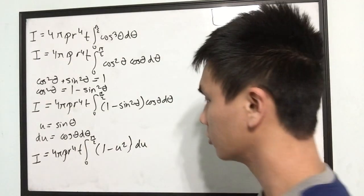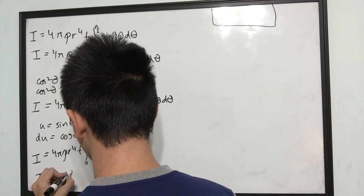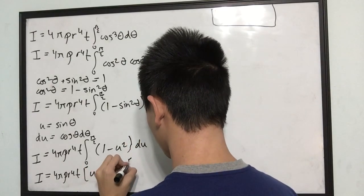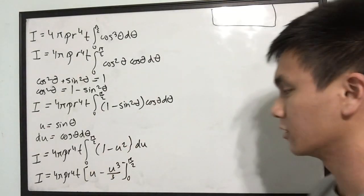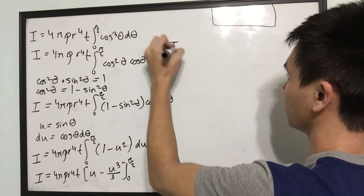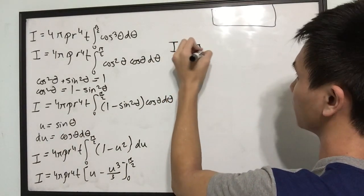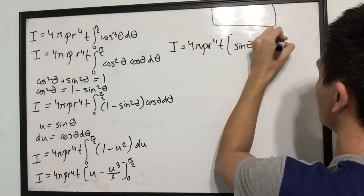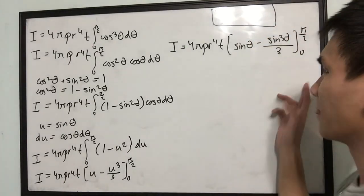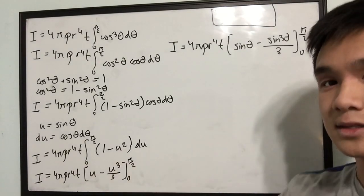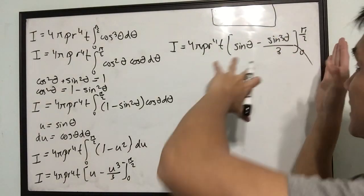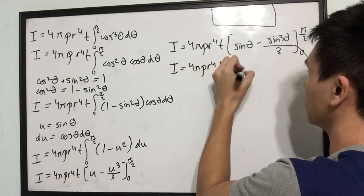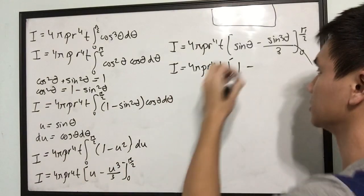By the power rule, this integrates to u − u³/3, evaluated from 0 to π/2. Back-substituting u = sinθ: we get [sinθ − sin³θ/3] evaluated from 0 to π/2. Plugging in 0, sine is 0 so that whole term goes away. Sine of π/2 is 1, so we get 1 − 1/3, which is 2/3.